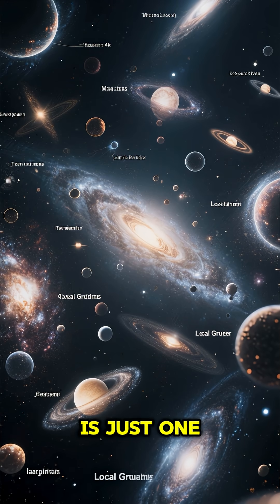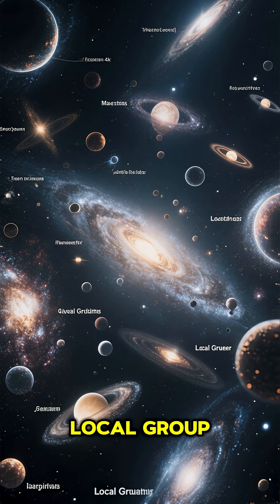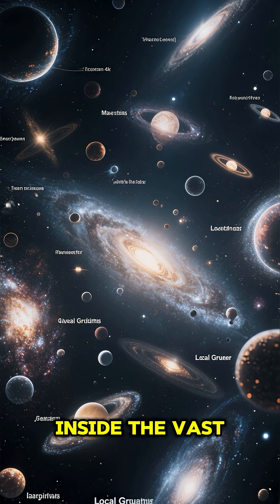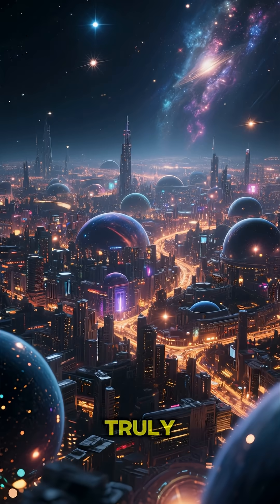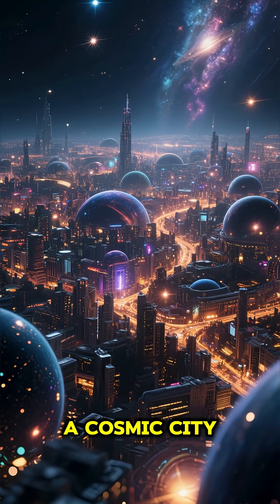Our Milky Way is just one of about 50 galaxies in the local group, all orbiting together inside the vast Virgo supercluster. Truly, we live in a cosmic city of galaxies.